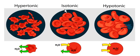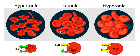These cells are in an isotonic environment here. A certain amount of water is going into the cell and an equal amount of water is coming out, so nothing goes wrong here.